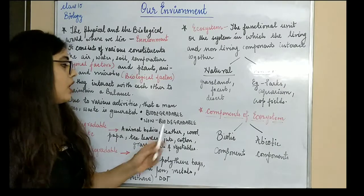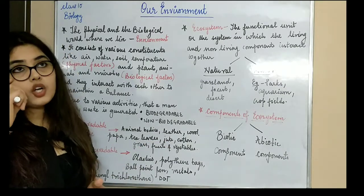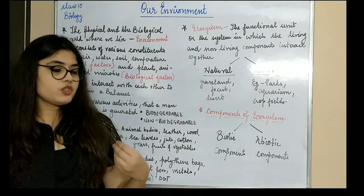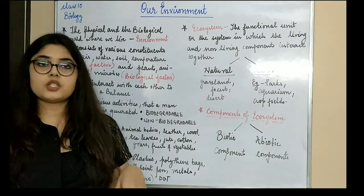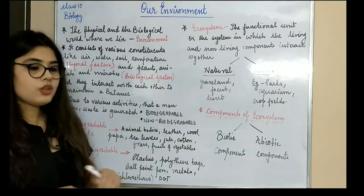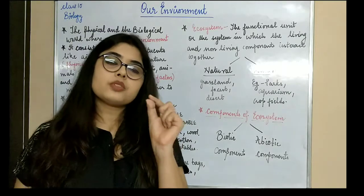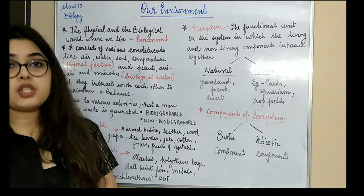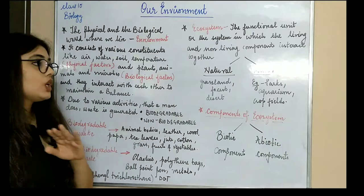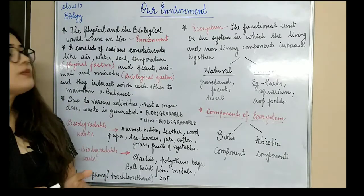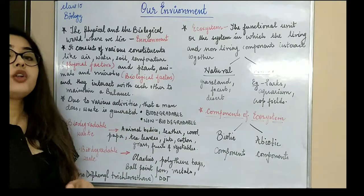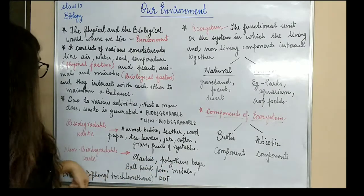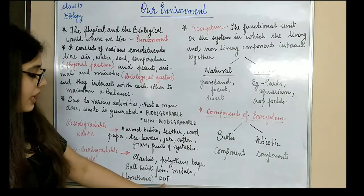For example, if you take a paper, a cloth, and a plastic bottle, and dig them into the soil, and cover them up — after three to four days you will see that decomposition has only happened in the cloth and paper; the plastic bottle will remain intact, nothing will be changed. So those substances which cannot be degraded or decomposed by microorganisms fall in the category of non-biodegradable substances. Examples are plastic, polythene bags, ballpoint pen, metals, and DDT — dichloro diphenyl trichloroethane.